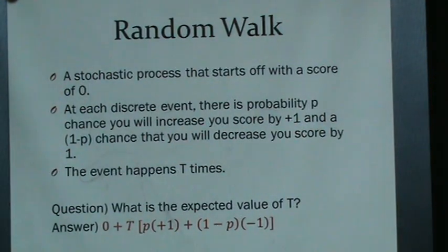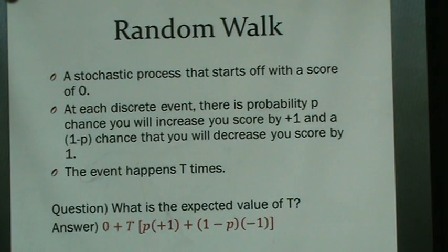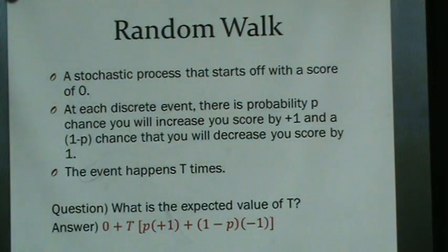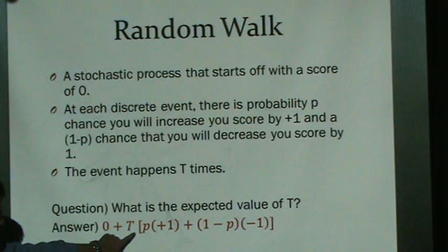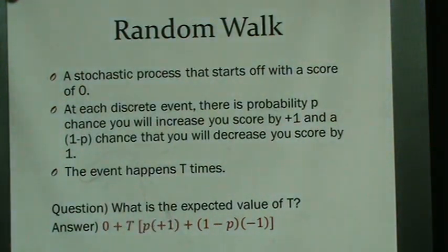In probability, there's a famous problem called a random walk. A random walk is a stochastic process that starts with a score of zero, and then at fixed discrete points in time — with the same interval between each — there's a probability P that your score will increase by one, and a probability one minus P that it will decrease by one. This event happens T times and then the walk is finished. The expected value of your walk starts at zero and depends on T steps.